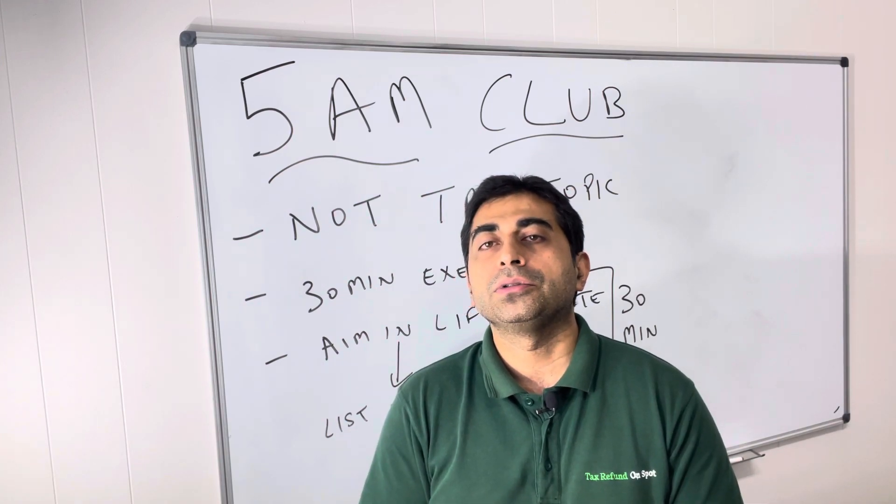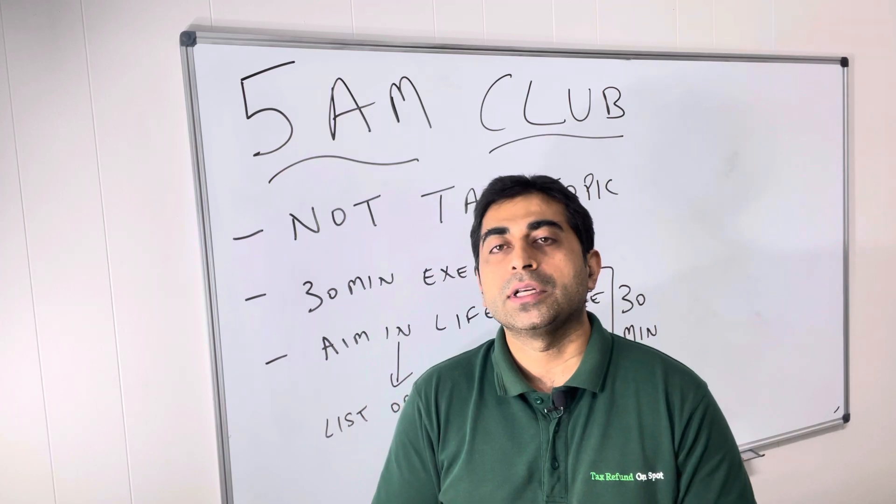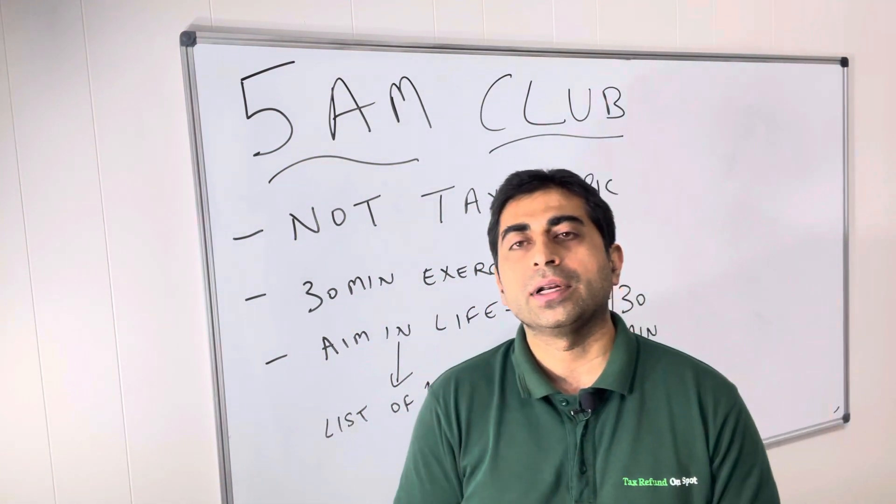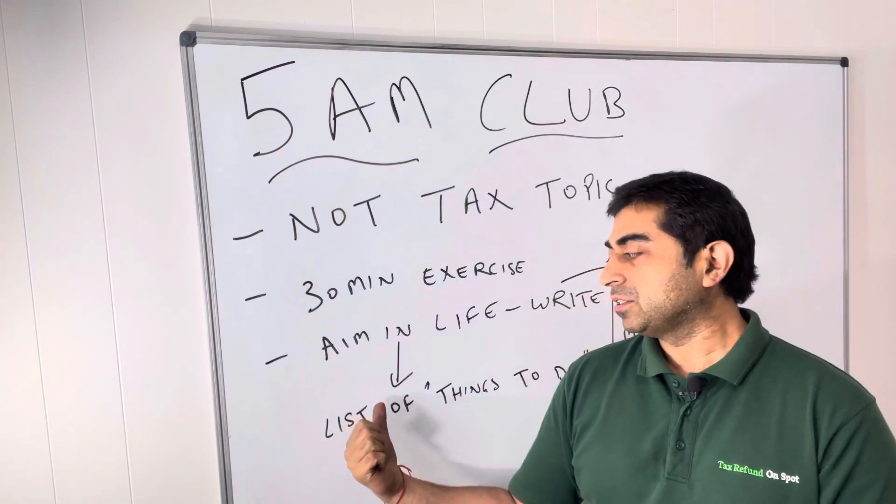And the other 30 minutes what you should do, you need to write on the paper what is your aim in the life, just one sentence or maybe two sentences, what do you want to achieve in the life. And just make a list of things to do.